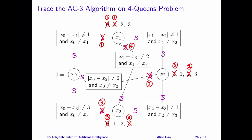Step 5. Let's remove the arc between x2 and x3, where x2 is the primary variable. Is this arc consistent? If x2 is 1, no value of x3 satisfies both constraints: x3 equals 1 violates a row constraint, and x3 equals 2 violates a diagonal constraint. If x2 is 3, x3 equals 2 satisfies both constraints. Therefore, the arc is not consistent, and we need to remove 1 from the domain of x2.